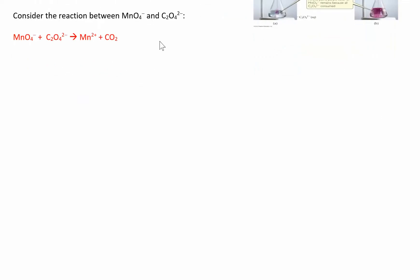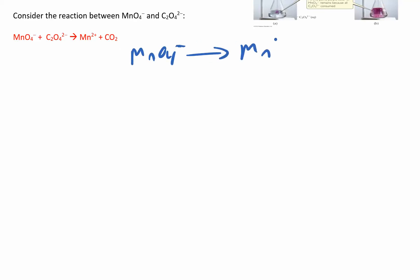Here's our reaction. First we split it into half reactions: MnO4⁻ and Mn²⁺ form one half reaction, and C2O4²⁻ and CO2 form the other. Now I want to balance everything other than hydrogens and oxygens. For the manganese half reaction, I have one manganese on each side — that's done.